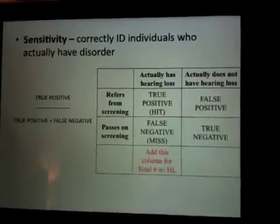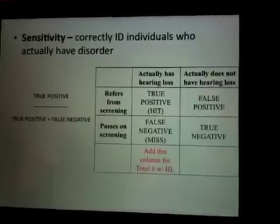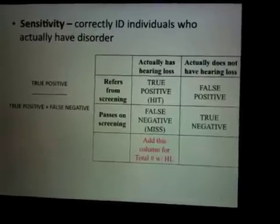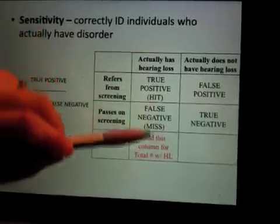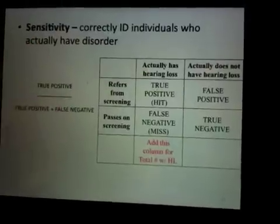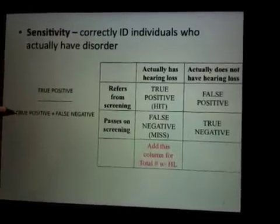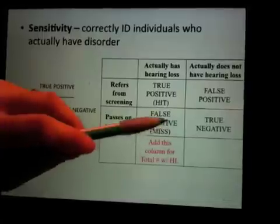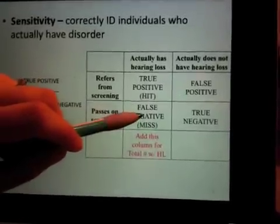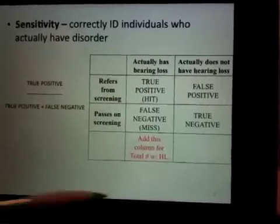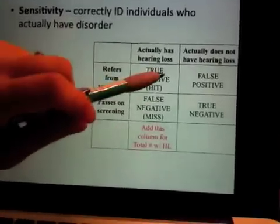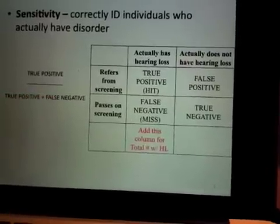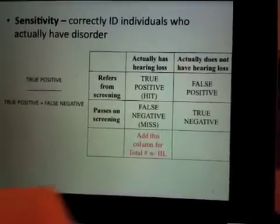Sensitivity correctly identifies individuals who have a disorder. We can calculate the exact sensitivity of a particular measure. When thinking about sensitivity, we're most concerned with individuals who actually have a hearing loss. The denominator of the ratio sums the number of true positives, or hits, along with the number of false negatives. We take the number of true positives and divide that by the sum total of true positives plus false negatives. That's our sensitivity number.